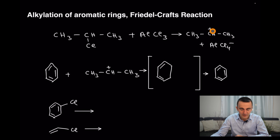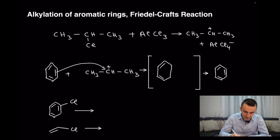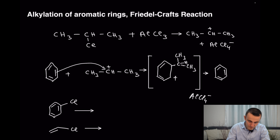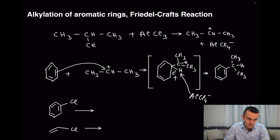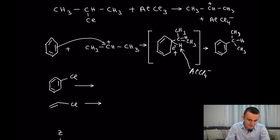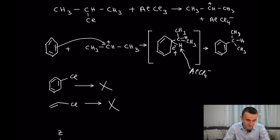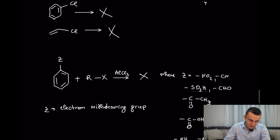Let's move to another important group — alkylation of an aromatic ring, also called Friedel-Crafts reactions. If you take a haloalkane and treat it with aluminum chloride as catalyst, it removes the chlorine to form a carbocation electrophile — a secondary carbocation in this case. The mechanism is the same: the ring attacks the carbon, connects it, and then the base removes the hydrogen to reform the double bond, giving the alkylated product.